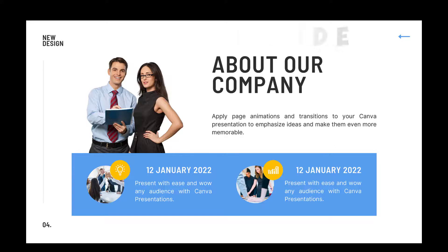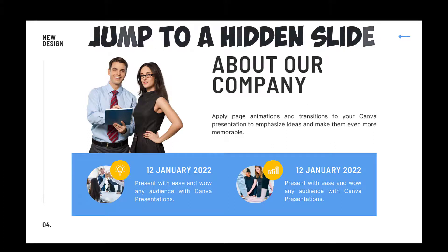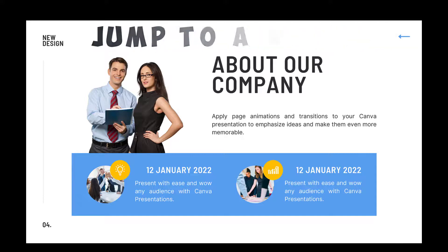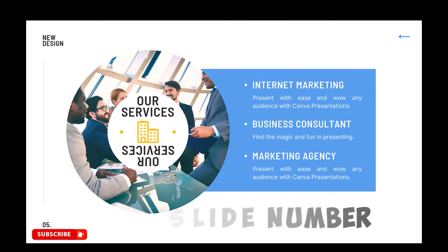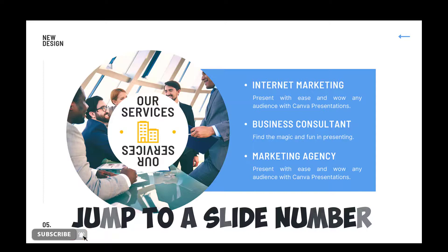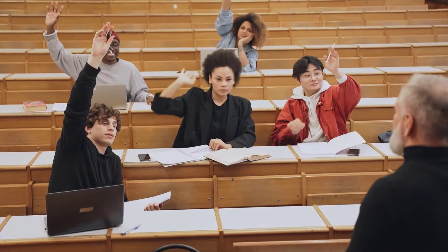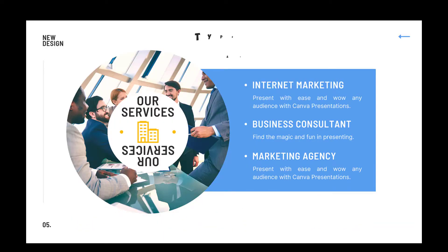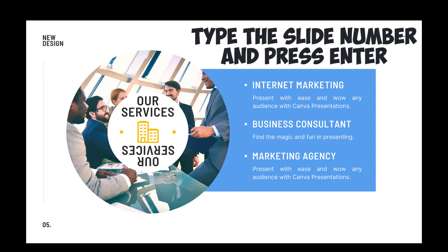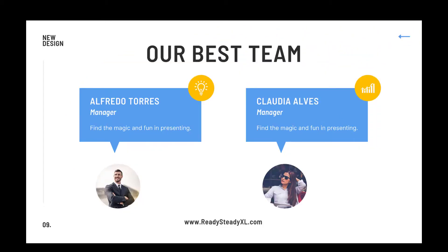Whilst you're in your presentation and you want to go to a hidden slide — maybe you weren't planning on covering that topic but a question comes up — just press H for hidden and it shows the hidden slide. If you want to jump to a specific slide number, maybe a question comes up and the answer is on slide nine, just press nine on your keyboard then Enter, and it will jump to the ninth slide.